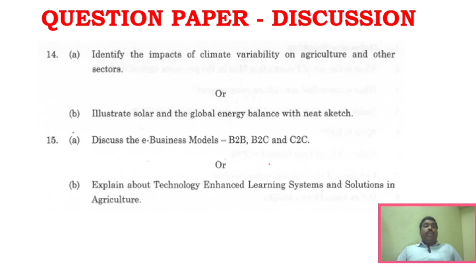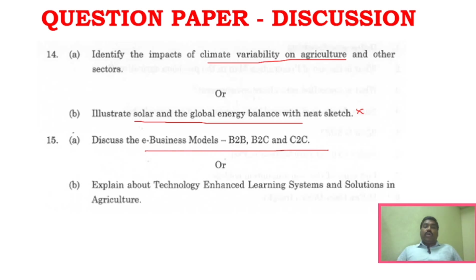For Unit 4 Part B: climate variability on agriculture and sectors, impact of climate variability, and solar and global energy balance. For Unit 5 Part B: e-business models and technology enhanced learning systems and solutions are the most important questions and key areas.